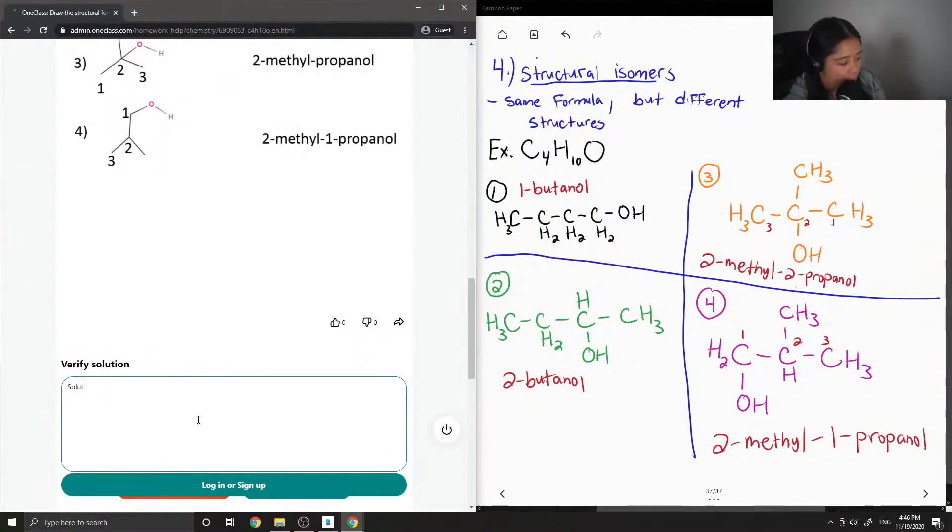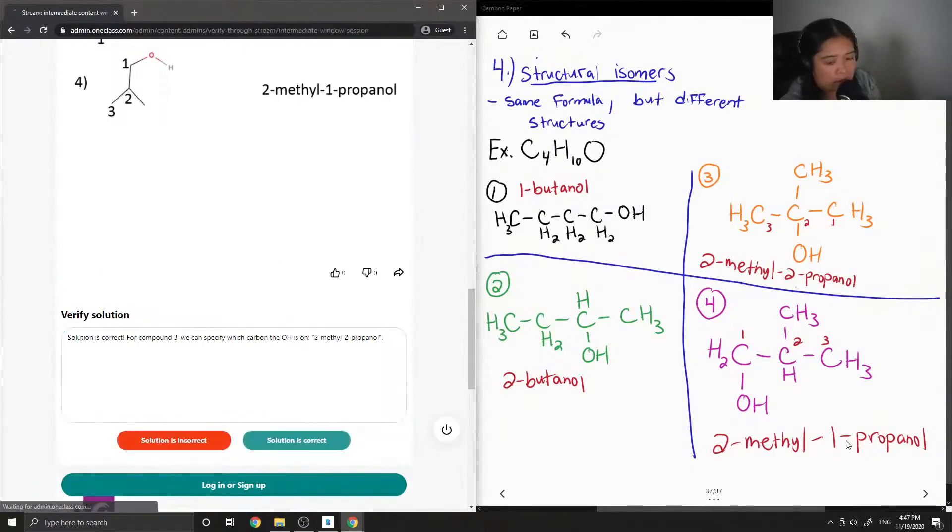I'm just going to say that the solution is correct. For compound 3, I added that we can specify which carbon the OH is on, because they just had 2-methyl-propanol but I said we can write it as 2-methyl-2-propanol. But the solution is still correct.